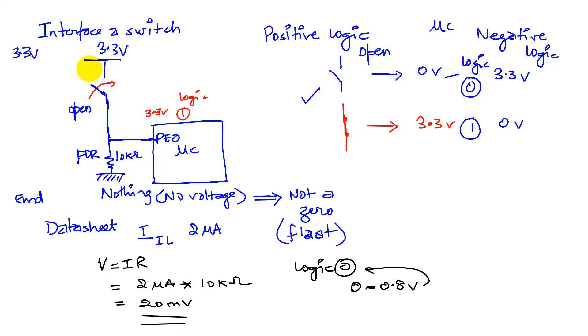In summary, if the switch is open, we're going to get a 0 here. And if the switch is closed, we're going to get 3.3, which will be a logic 1.